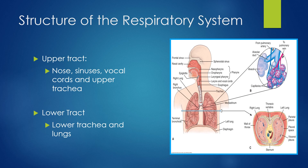The lower respiratory tract consists of the lower trachea and the lungs, and it does the work of gas exchange. The human body has two lungs with a total of five lobes. Together, these two tracts work with the circulatory system to oxygenate the blood, deliver oxygen to the body, and expel carbon dioxide from the body.